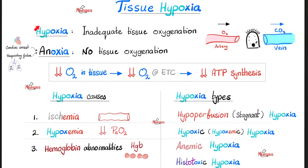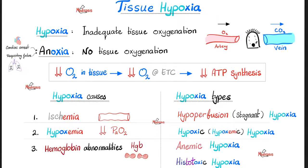Pause and review. Define hypoxia: inadequate tissue oxygenation. Define anoxia: not less oxygen — no oxygen. Anytime there is less oxygen or no oxygen, who's going to suffer? The mitochondria. Who's going to suffer in the mitochondria? The electron transport chain. Therefore, you cannot make ATP. When your body cannot make energy, you're about to kiss life goodbye.